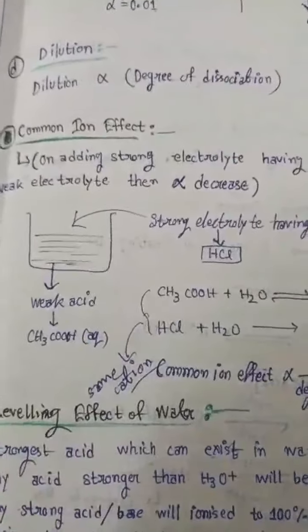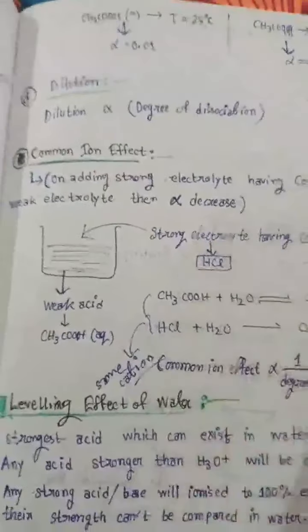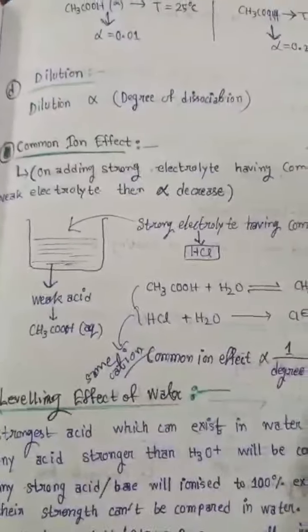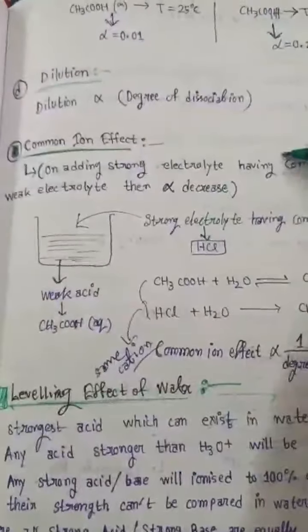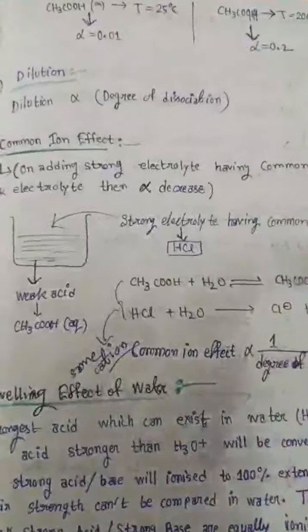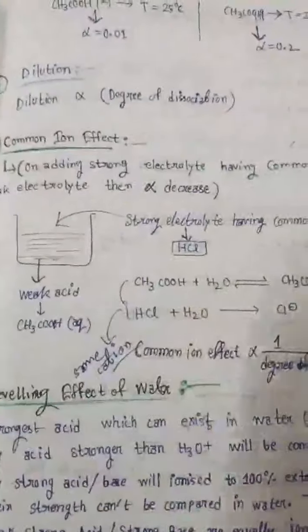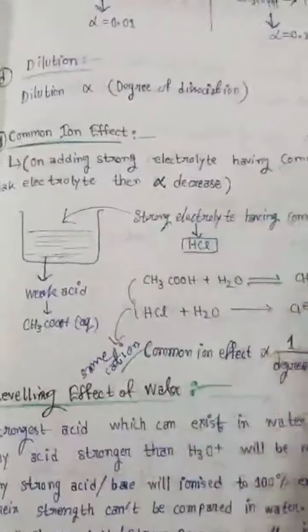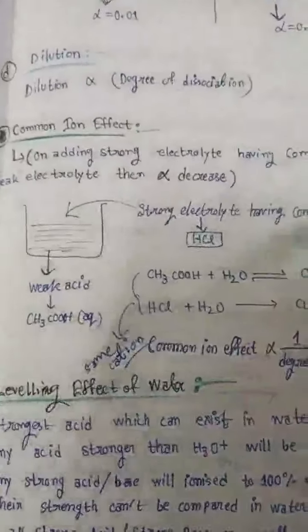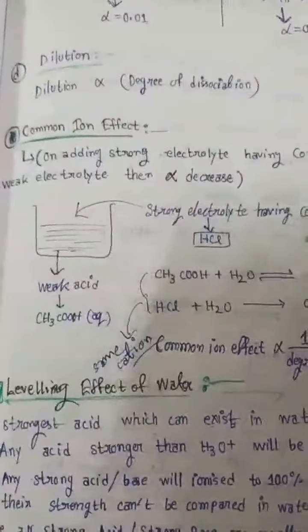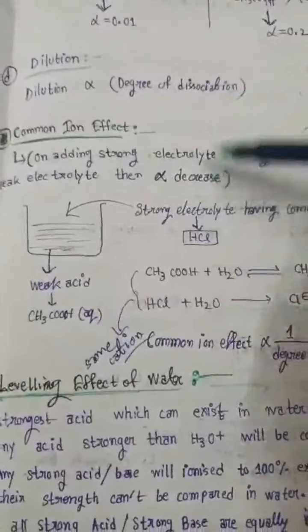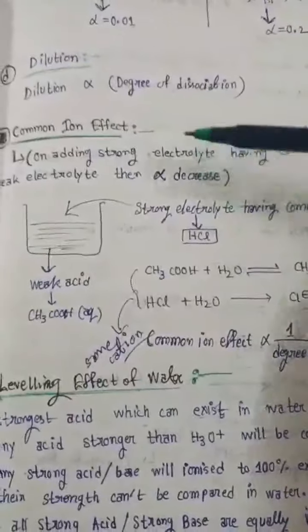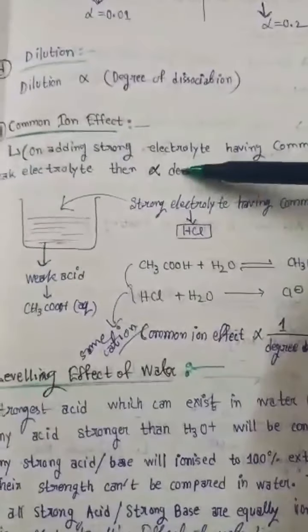Common ion effect হচ্ছে যখন একটা strong electrolyte কে কোনো একটা weak electrolyte solution এ add করা হচ্ছে, এবং সেই strong electrolyte এর যে dissociation হচ্ছে সেটার same ion যদি weak electrolyte dissociation এ same ion তৈরি হচ্ছে, তখন সেই same ion এর প্রভাবে alpha অর্থাৎ degree of dissociation সেটা automatically decrease হয়ে যায় in the solution.